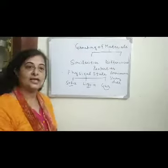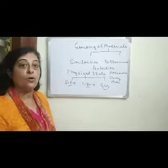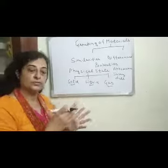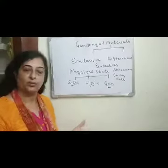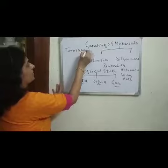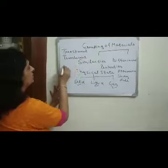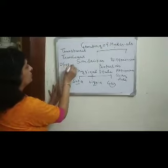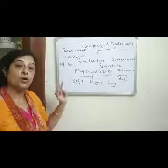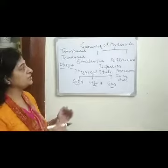We can also classify objects on the basis of whether they float on water or sink in water, or whether they are hard or soft. Similarly, on the basis of transparency — whether a material is transparent, translucent, or opaque — we can divide materials into different groups.